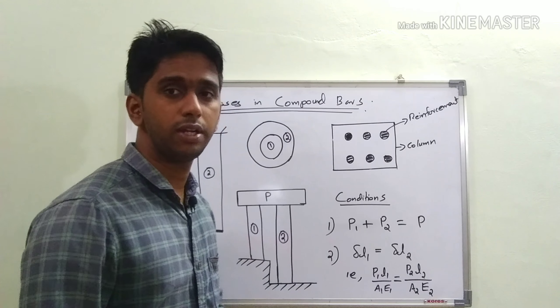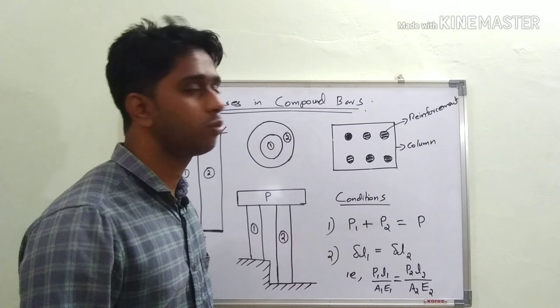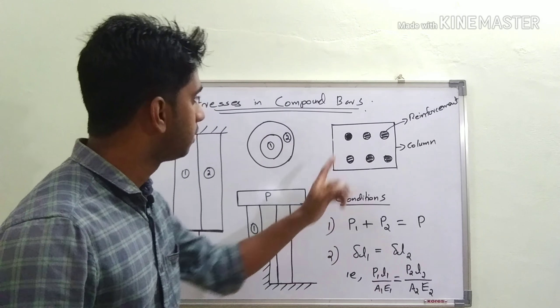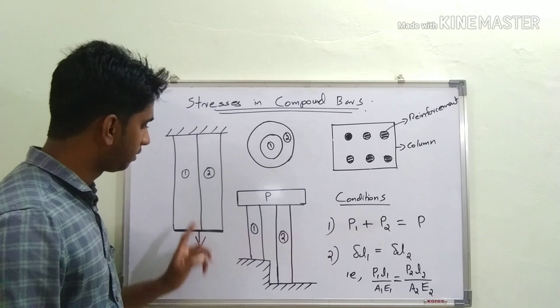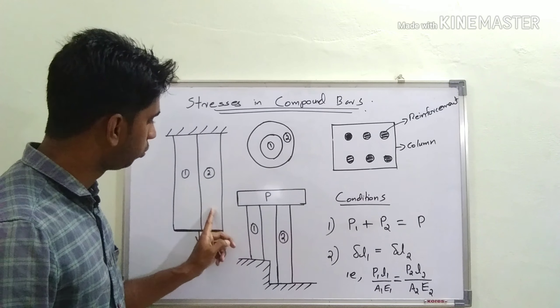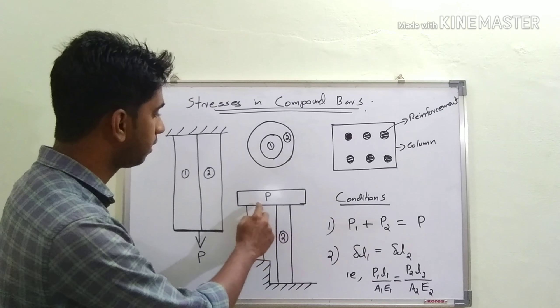I've drawn the cross section here, and here I have drawn the cross section of a reinforced concrete column. This is a reinforced concrete column having six reinforcements.